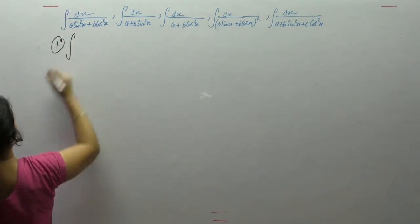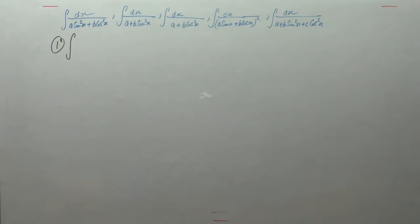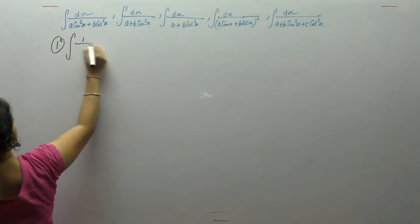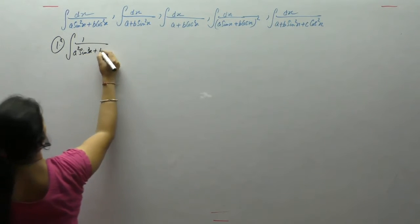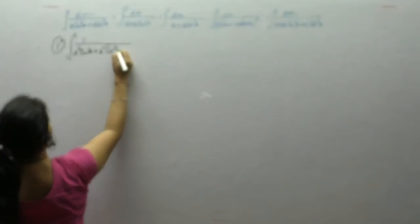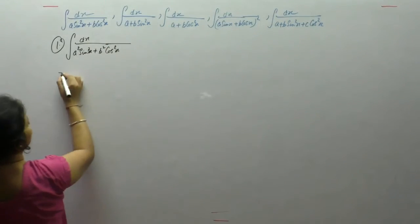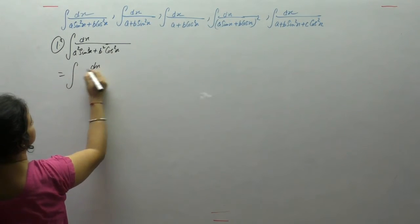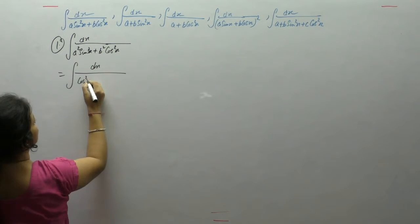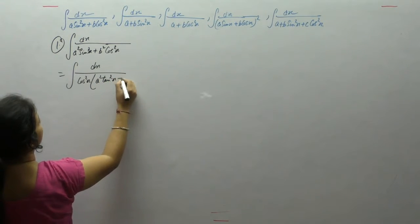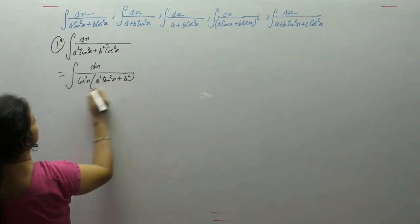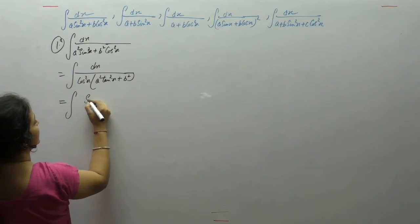Let's start with question number 1: 1 upon a² sin²x plus b² cos²x. Take cos²x common. Sin upon cos equals tan, and we can write 1 upon cos as sec.